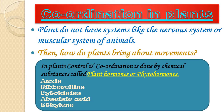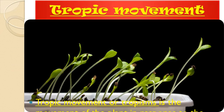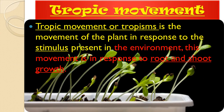The movement or growth of any part of a plant in response to an external stimulus is called tropism or tropic movement. Tropic movement is the movement of the plant in response to a stimulus present in the environment, and can involve the root or shoot. A stimulus is something which causes a change or reaction — for example, if we provide water or sunlight to a plant, growth takes place in that particular direction.